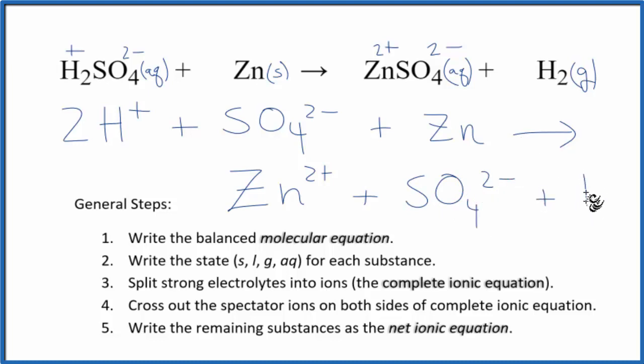And then hydrogen, it's a gas. We don't split gases up in net ionic equations. So this here, this is considered our complete ionic equation, also called a total ionic equation.